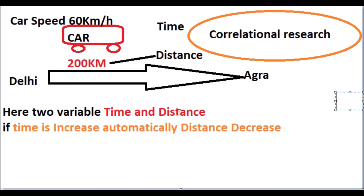Finally, we can see that correlational research basically depends on two variables, and both variables are dependent on each other. If one variable's value increases, the other variable's value is automatically impacted — either in a positive way or a negative way, but there is an impact.